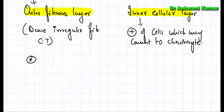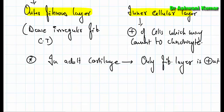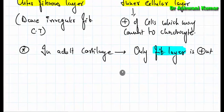It should also be noted that in adult cartilage, only the fibrous layer is present. There is no chondrogenic layer or inner cellular layer present in adult cartilage.